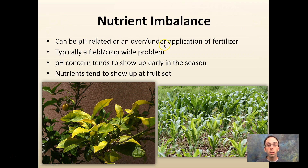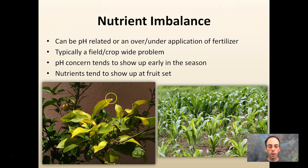Nutrient imbalance can be pH-related and/or the result of over- or under-application of fertilizer. Under-application means plants are starving for a particular nutrient; over-application means you could be blocking certain nutrients. It's typically a field- or crop-wide problem. pH concerns tend to show up early in the season, while nutrient imbalances tend to show up more at fruit set. Here we see a citrus crop with some nutrient imbalance, and here's a corn plant — the corn in the back is doing well while the corn here shows yellowing, suggesting it's probably nutrient-oriented rather than disease.